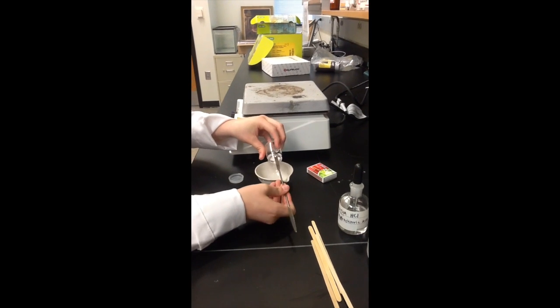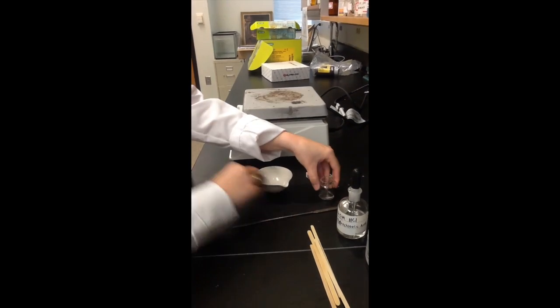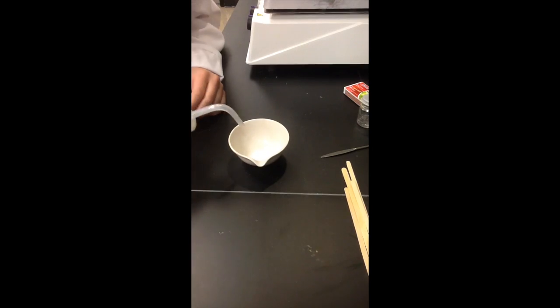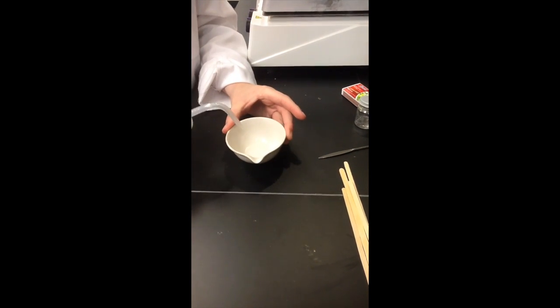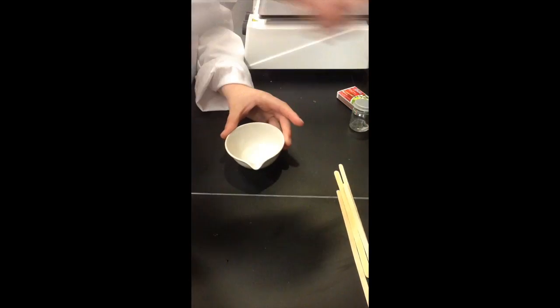Add the remaining unknown compound to the evaporating dish and determine the mass. Add DI water until the compound has dissolved.